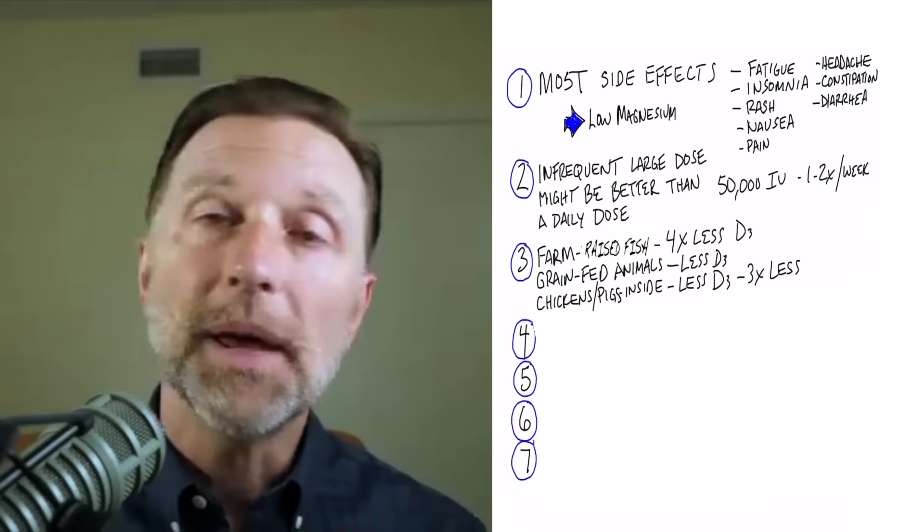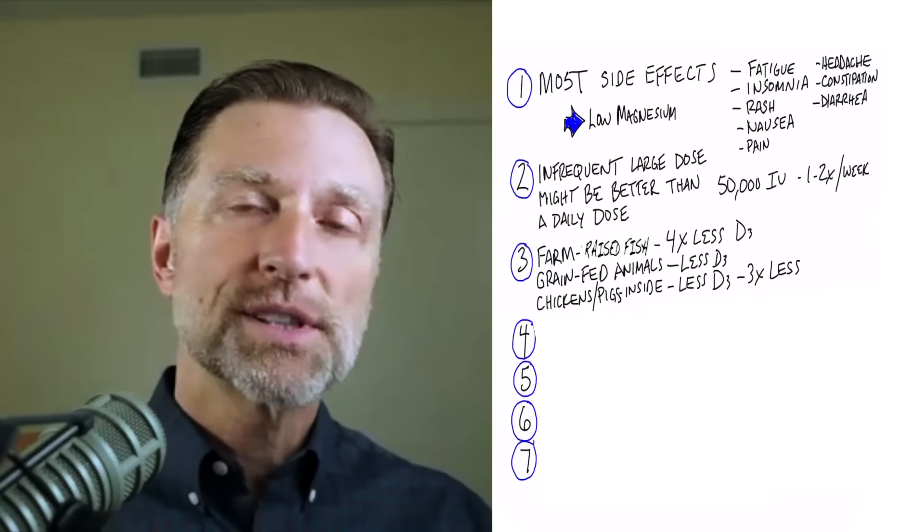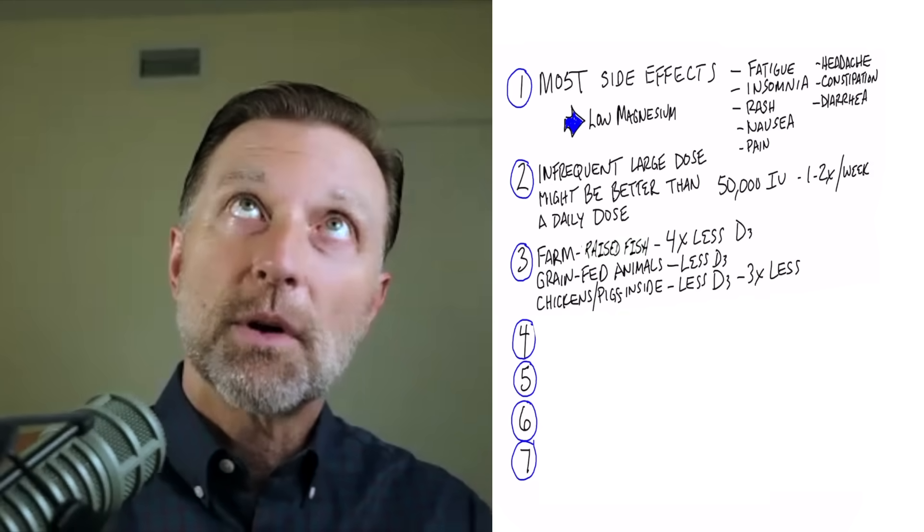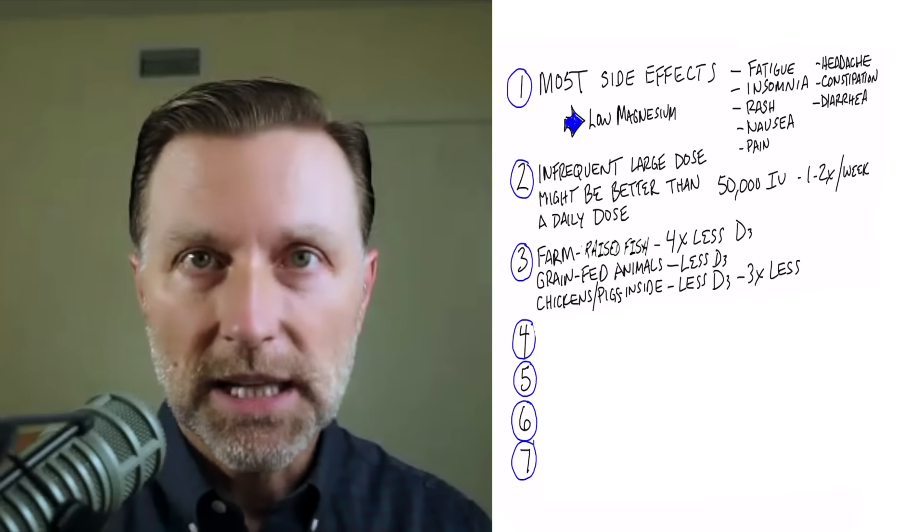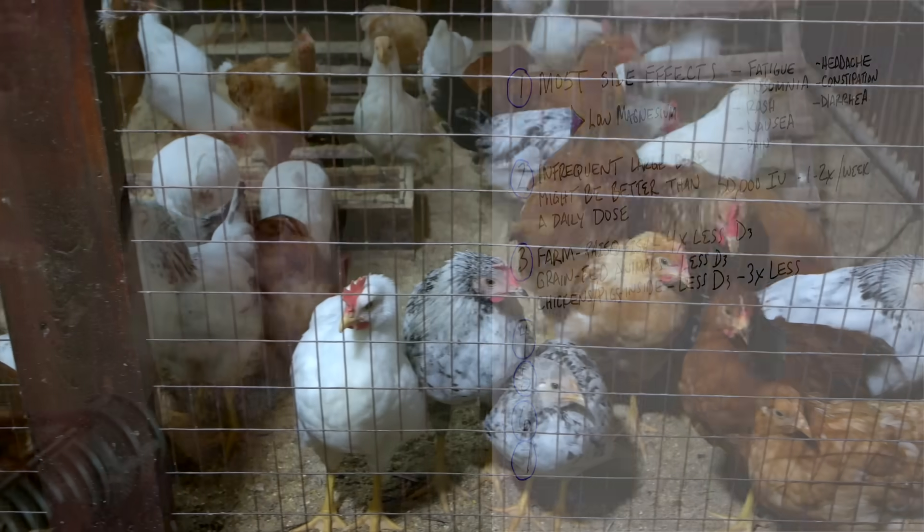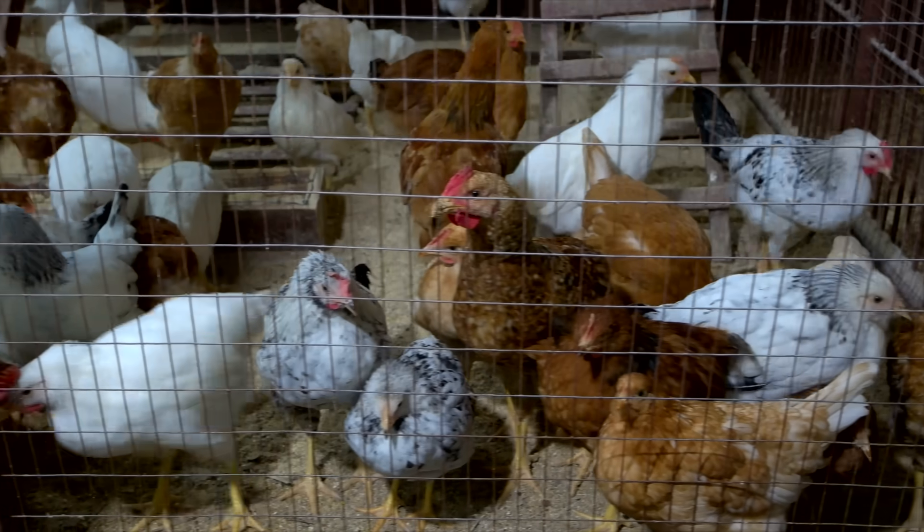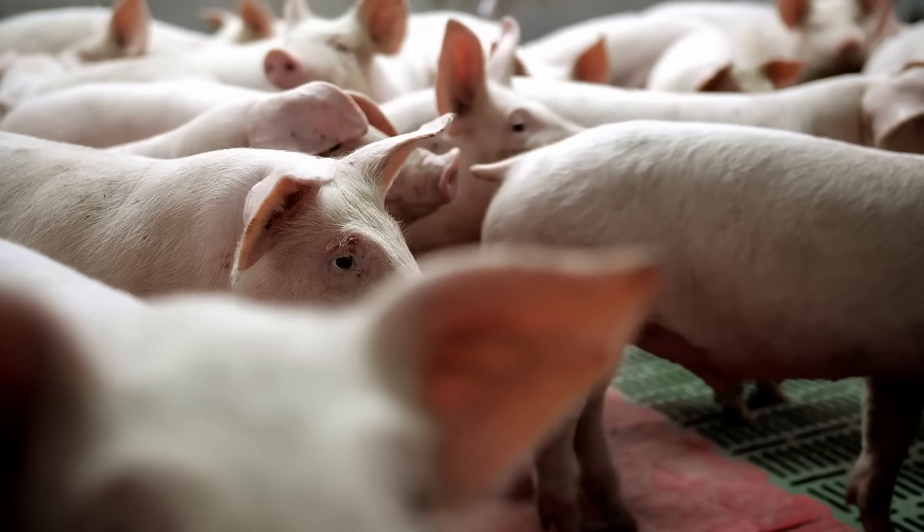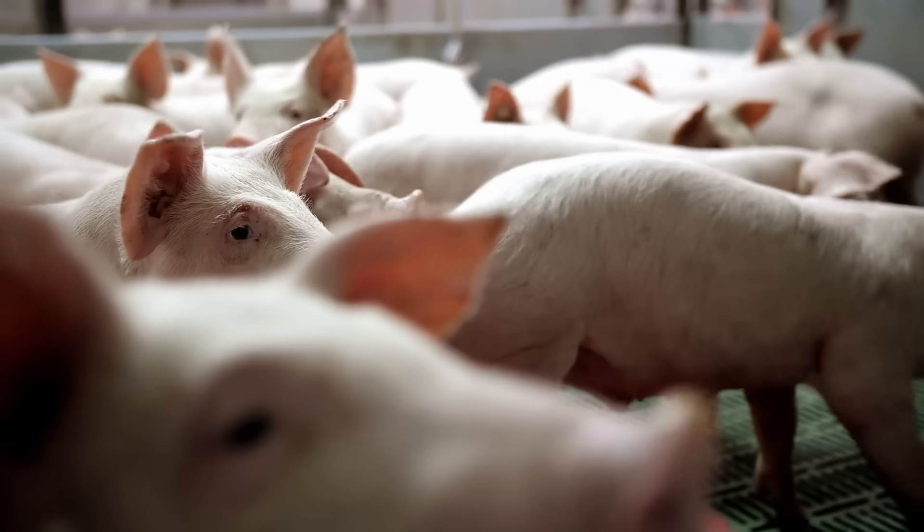And chickens and pigs that roam outside and are exposed to the sun have much more vitamin D than these pigs and chickens that are confined to a structure. In fact, when a pig or chicken doesn't get to see the daylight, they have three times less vitamin D.